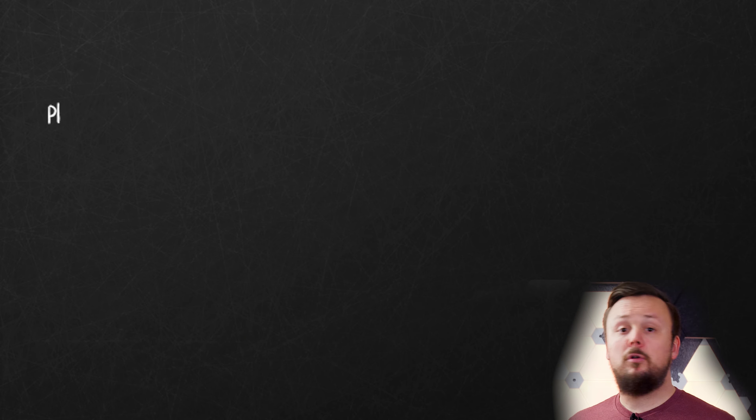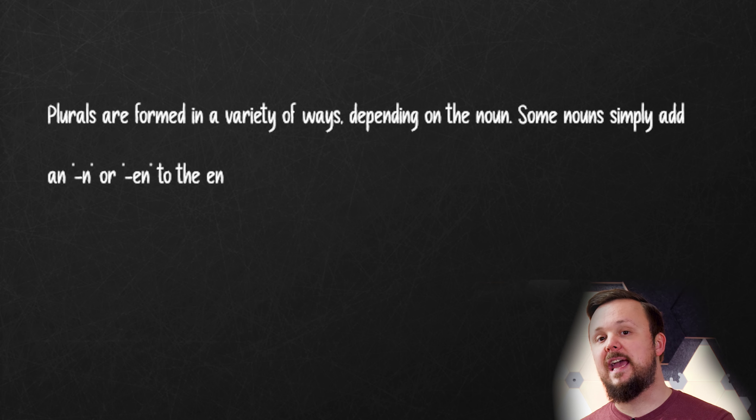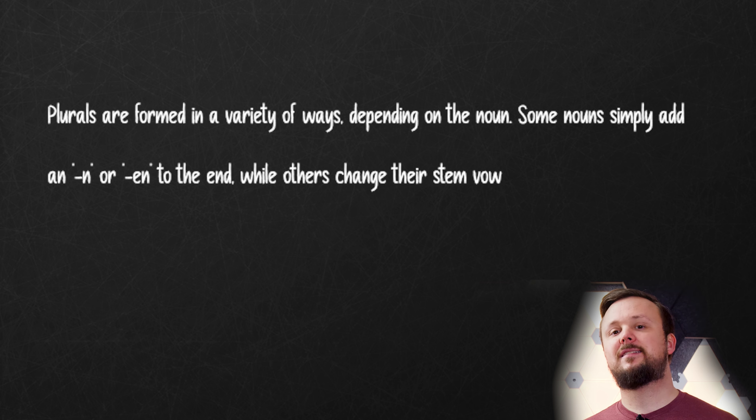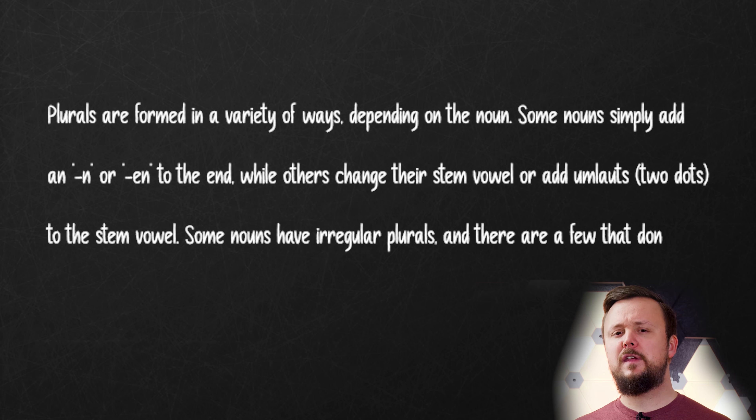But don't worry, we're gonna look at this more closely later. In addition to gender and case, German nouns also have plural forms. Plurals are formed in a variety of ways depending on the noun. Some nouns simply add an N or EN to the end, while others change their stem vowel or add umlauts. Some nouns have irregular plurals and there are a few that don't change at all. Learning German nouns can be challenging, but it's an important part of mastering the language. By paying attention to gender, case, and plural forms and by practicing with different examples and exercises, you can improve your ability to use German nouns correctly and confidently.